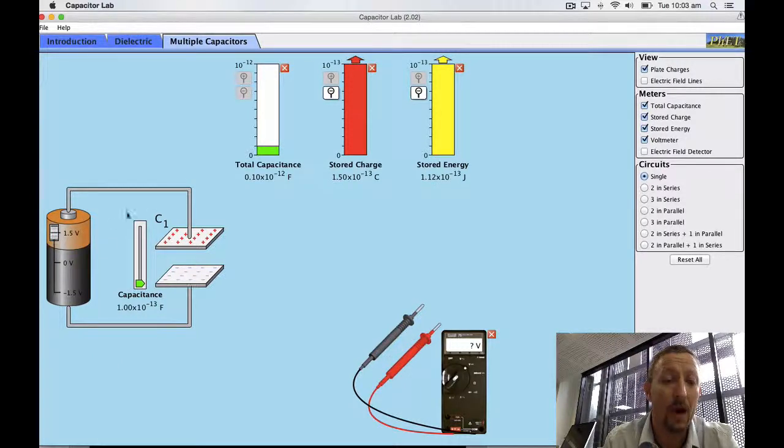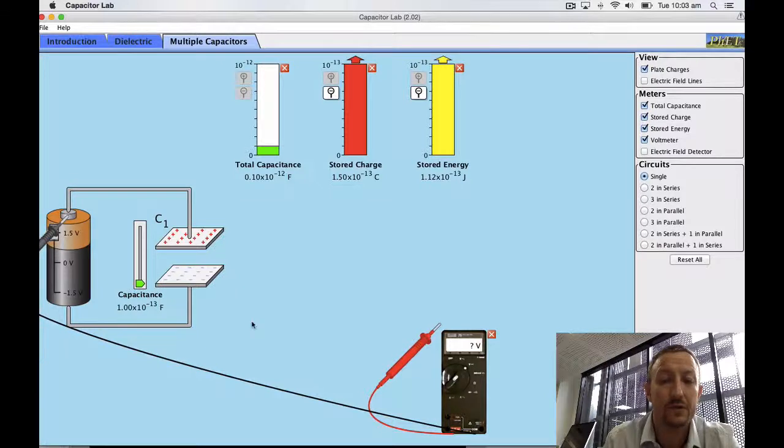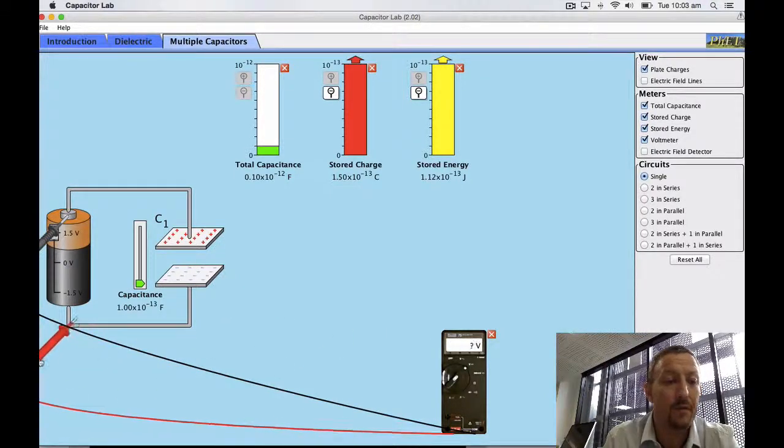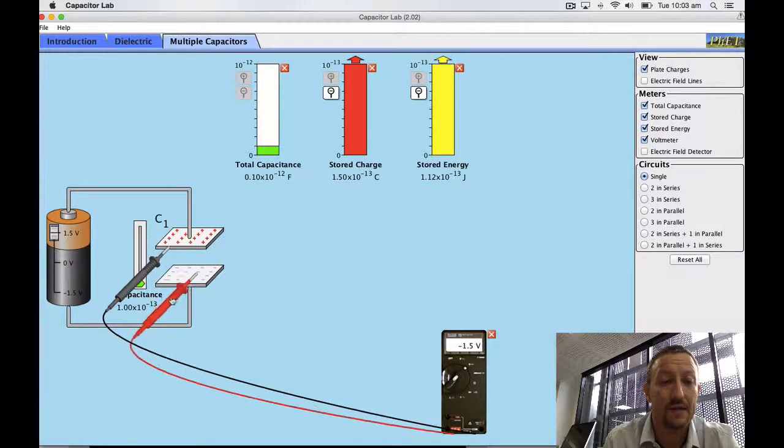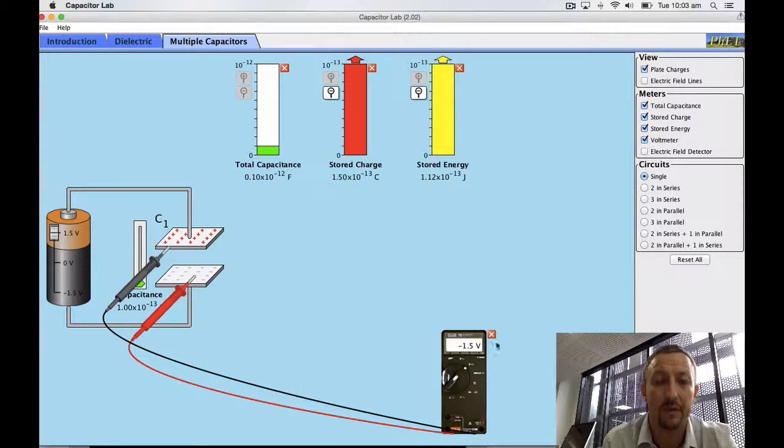So let's put up our single capacitor there. I've got it at 1.5 volts. I can measure my 1.5 volts using my voltmeter and you can see that that's what it's reading, and then we'll check it on the capacitor and it's also 1.5 volts.